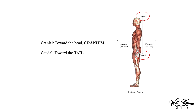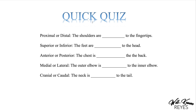Then we have cranial and caudal. Cranial means toward the head or cranium — an easy way to remember it is the word cranium. Caudal means toward the tail. For instance, the neck is cranial relative to the tail. Coming up on the next slide is a quick quiz, and that example is actually a cranial or caudal question. I want you to give it a try.